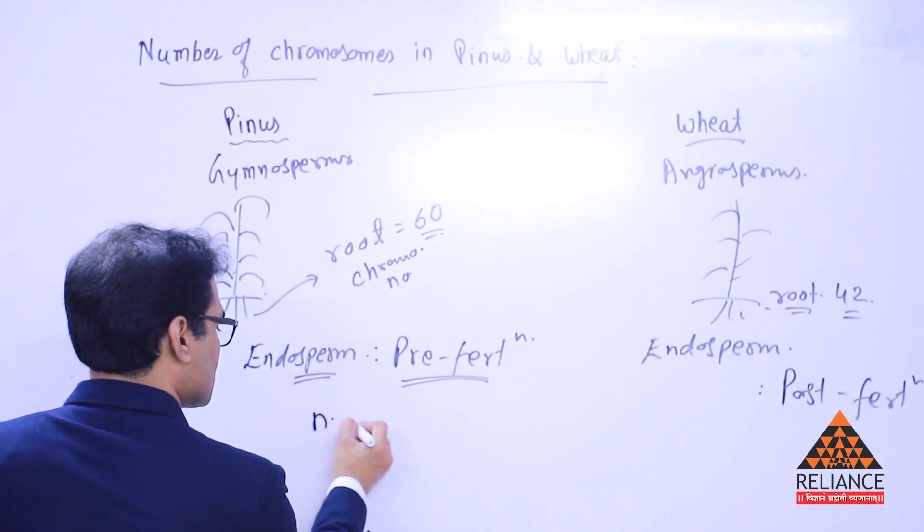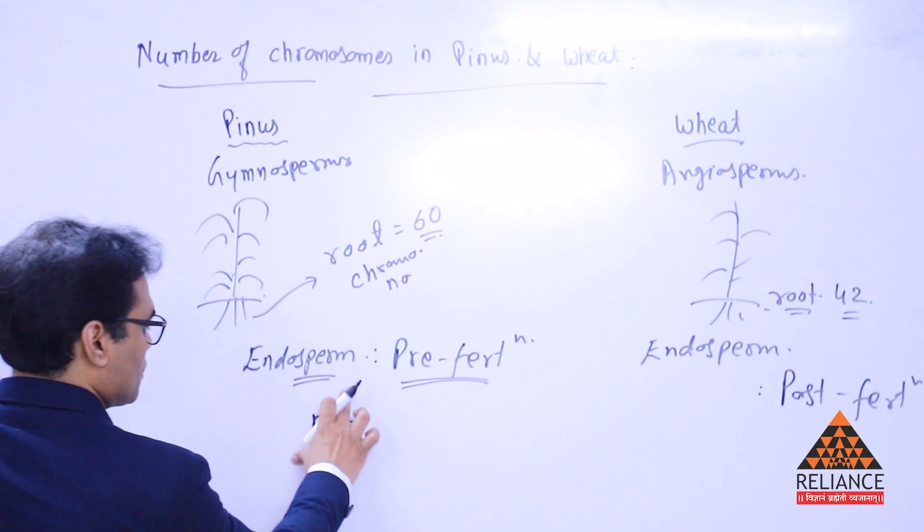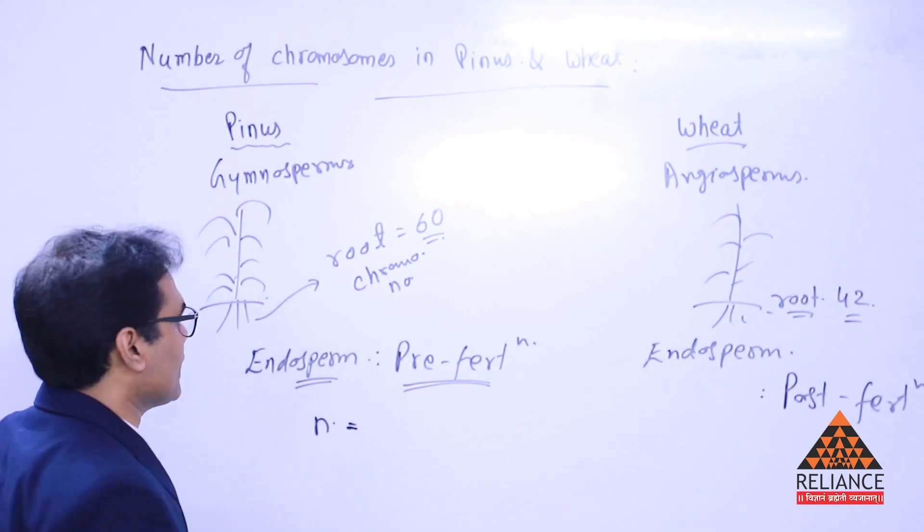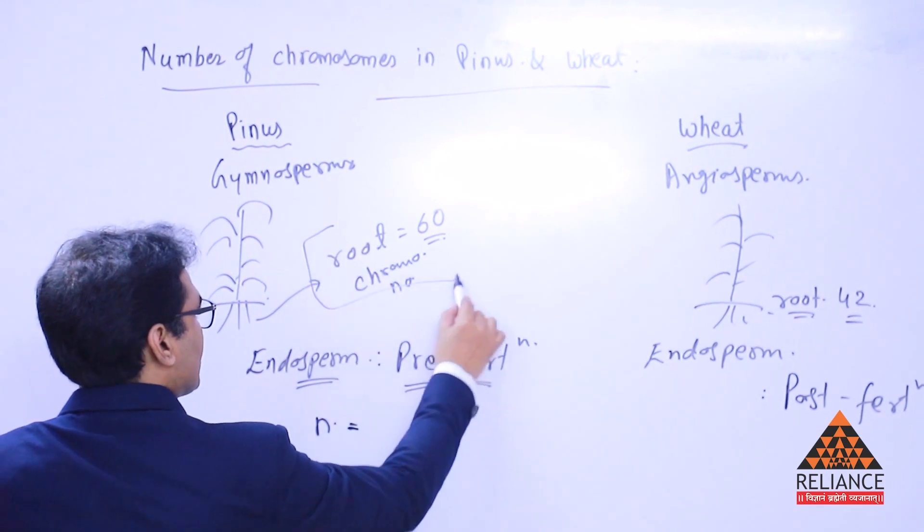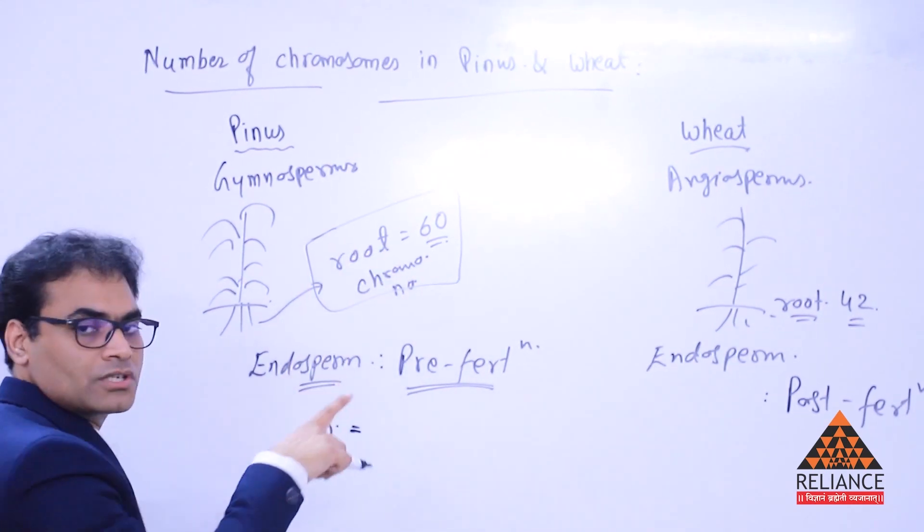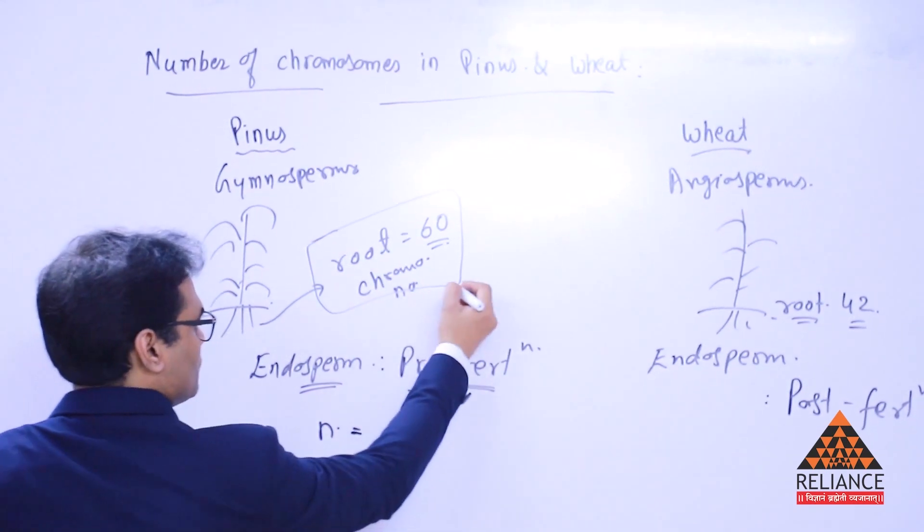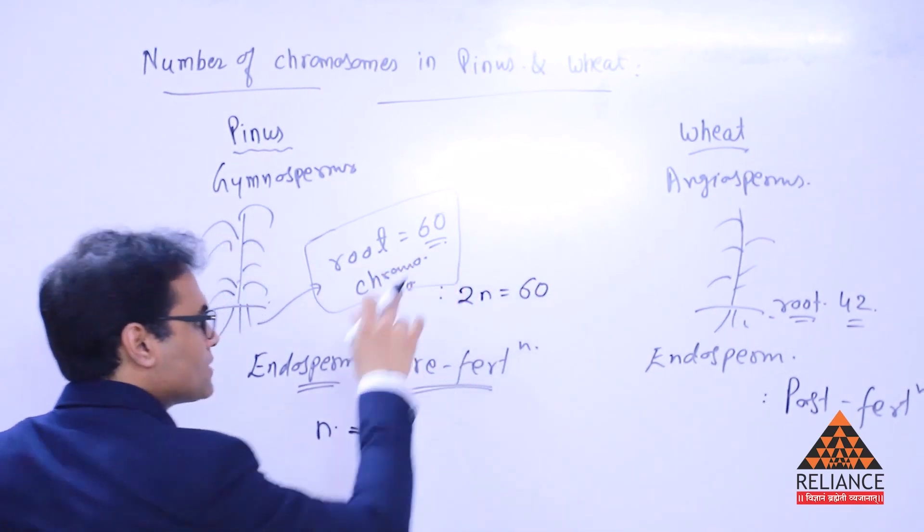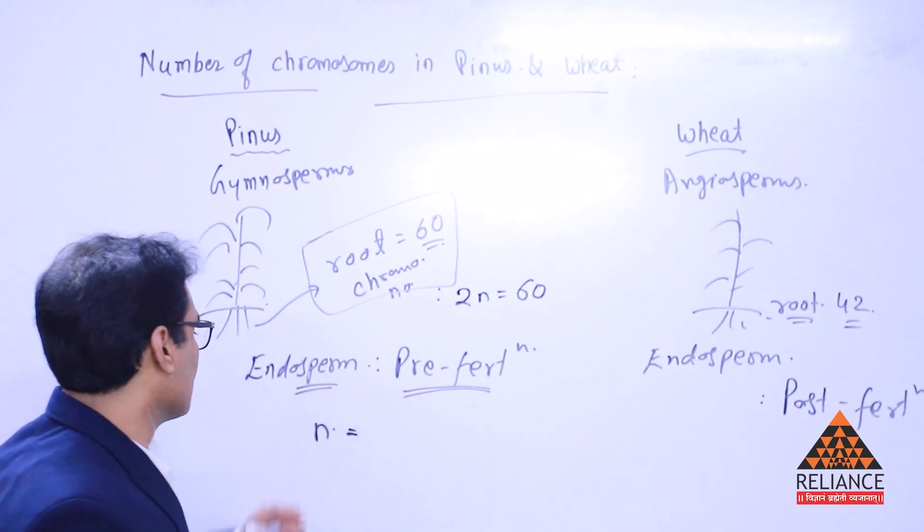If it's a pre-fertilization event, it is just N. Endosperm chromosomes are represented by N, by that I mean the haploid state. And obviously, what they are given over here is the number of chromosomes in the root. By the root, I mean some typical diploid cell. So, you can also write it as 2N being 60.